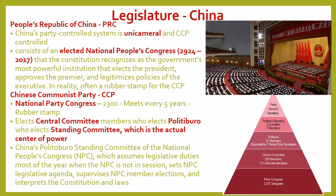The Constitution recognizes the National People's Congress as China's most powerful institution — it elects the president, approves the premier, and legitimizes executive policy. But in reality, much like we see with Russia, it is a rubber stamp organization for the Chinese Communist Party.